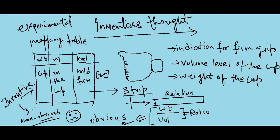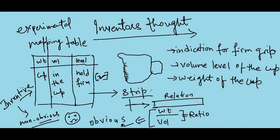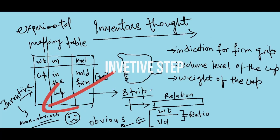For finding indicator of volume in the cup, we need to design an experiment which provides relation between strip level and ratio of cup weight to liquid volume. Provided method may fall under obvious or non-obvious solution. It's completely depends on inventive step.